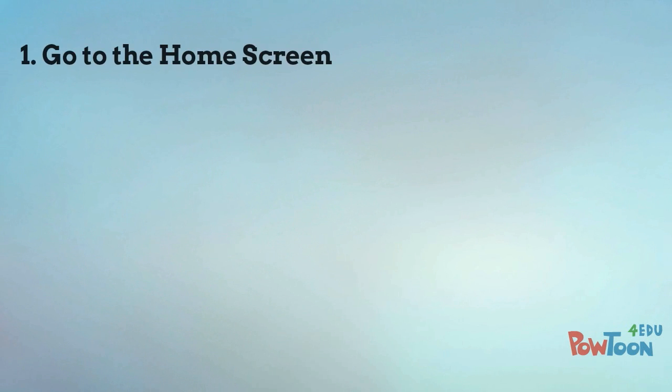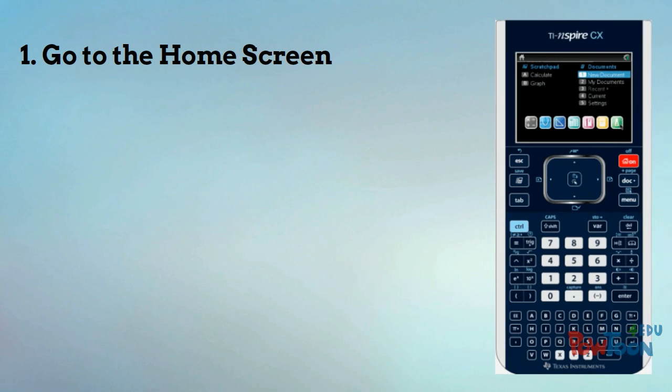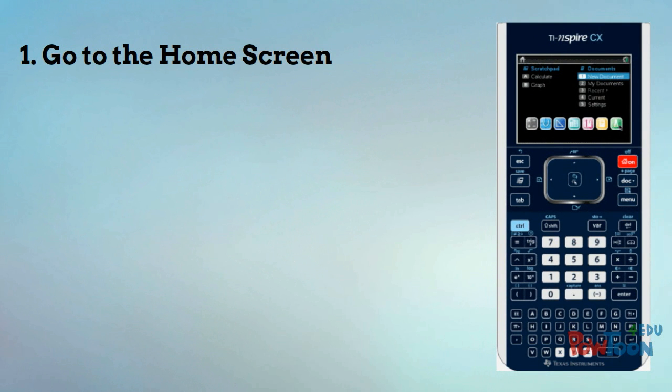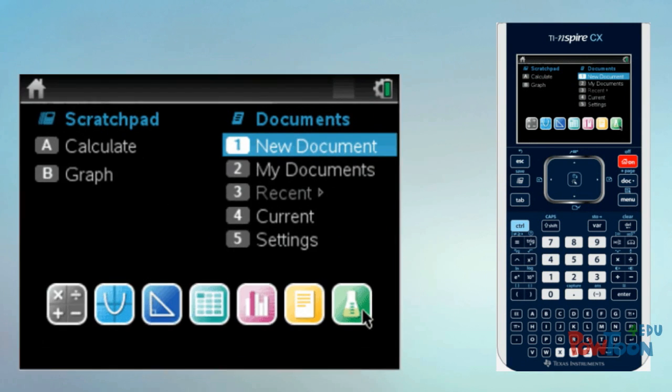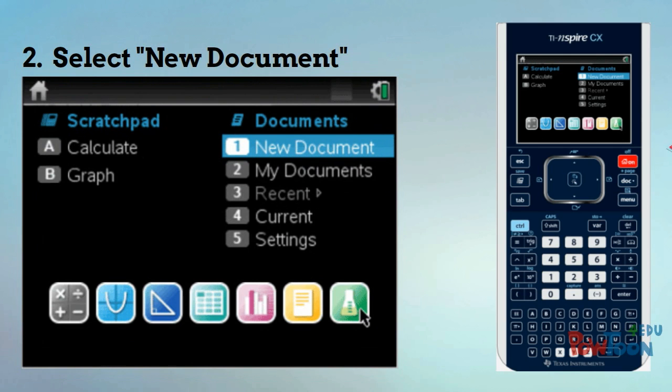First, you want to go to the home screen. If the home screen doesn't appear when you turn on the calculator, then press the ON button in the upper right-hand corner of the keypad. You need to create a new document, so press 1 on the home screen.